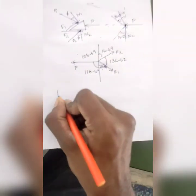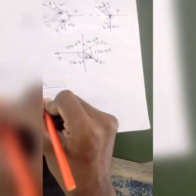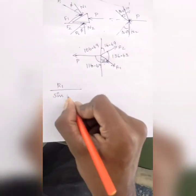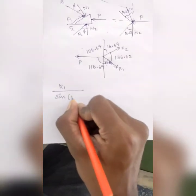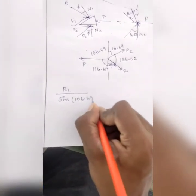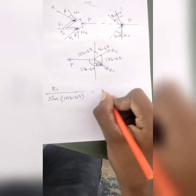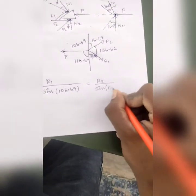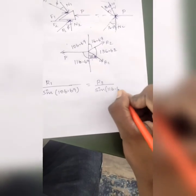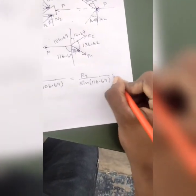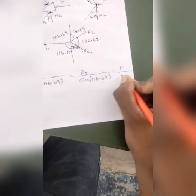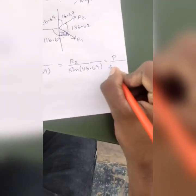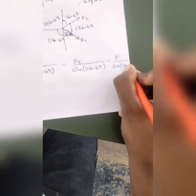R1 by sin of 106.69, which is equal to R2 by sin of 116.65, is equal to P by sin of 136.62.